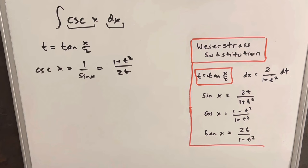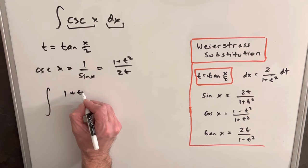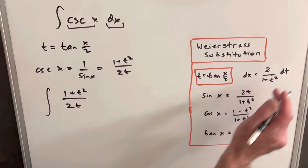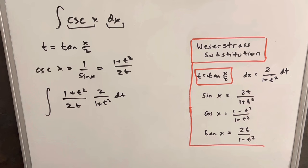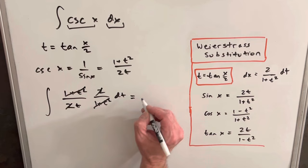So we'll put this in for cosecant and we'll have 1 plus t squared over 2t. Then for dx, we'll substitute in this guy, we're going to have 2 over 1 plus t squared dt. Then we've got our cancellation, right? We can cancel this and this, a 2 and a 2, and we're left with one of the simplest integrals. We're just left with dt over t.